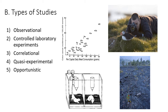You can also have multiple different types — a correlational opportunistic study, an observational opportunistic study — and so thinking about these definitions and what exactly the researchers are doing will help you understand which of these apply.